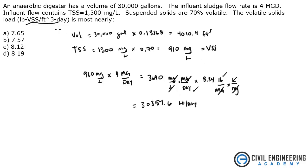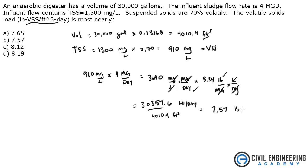We're still not to the final unit yet. We've got pounds of volatile suspended solids per day. And we're going to divide that by our cubic feet, which is our volume — divide that by 4010.4 cubic feet. That gives us 7.57 pounds of VSS per cubic foot per day.